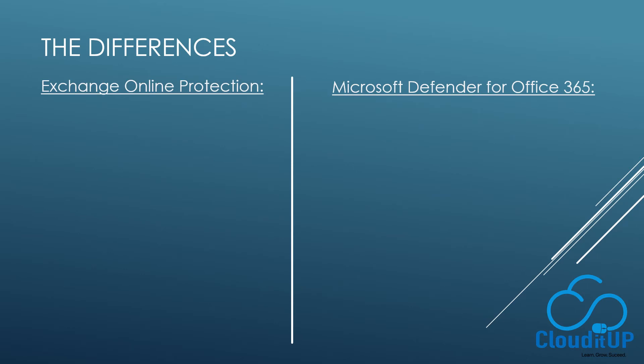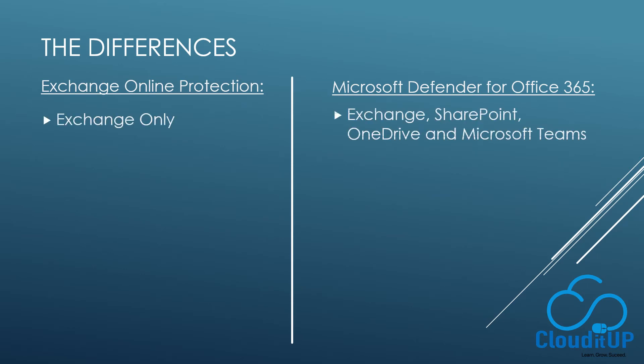We can list the differences in this table. Exchange Online Protection provides protection only for emails, whereas Microsoft Defender for Office 365 provides protection for emails and files stored in Exchange, SharePoint, OneDrive, and Microsoft Teams.